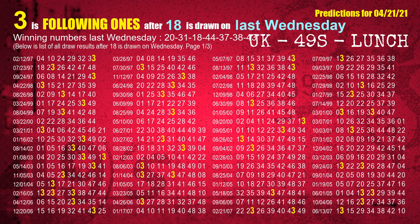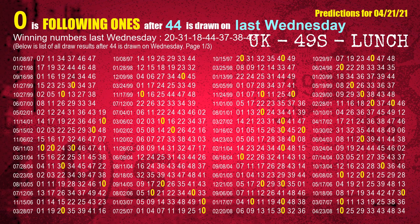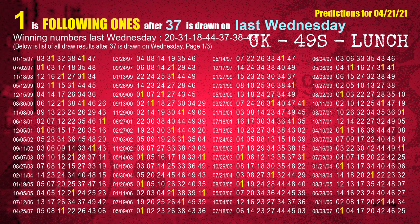The third winning number last Wednesday is 18. The most frequently following units digit is 3 when 18 is the winning number on last Wednesday. The fourth winning number last Wednesday is 44. The most frequently following units digit is 0 when 44 is the winning number on last Wednesday. The fifth winning number last Wednesday is 37. The most frequently following units digit is 1 when 37 is the winning number on last Wednesday.